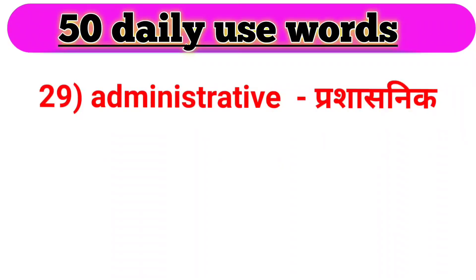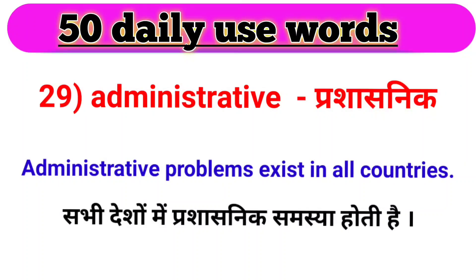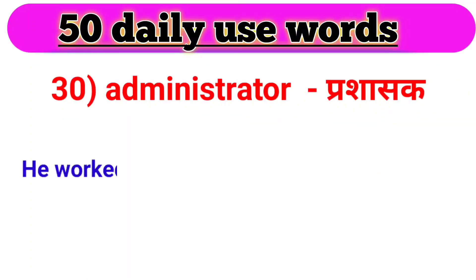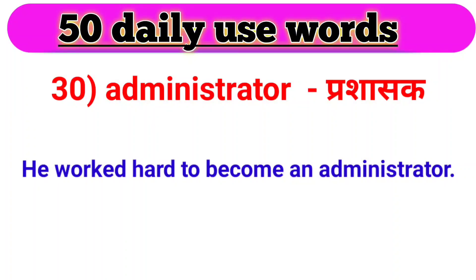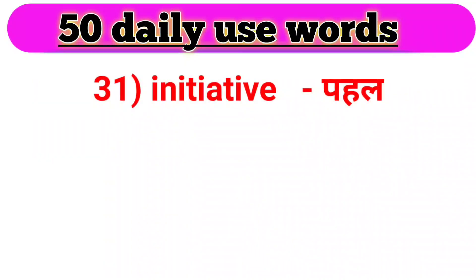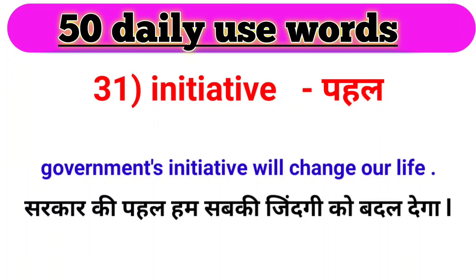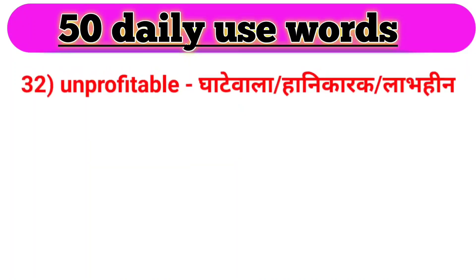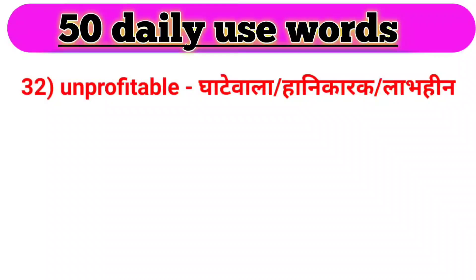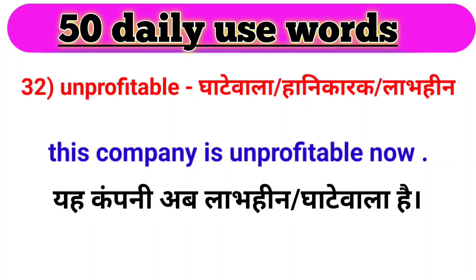Agla word hai — administrative. Administrative ka matlab hota hai prasaasanik. For example: Administrative problems exist in all the countries. Next word, we have administrator. Administrator ka matlab hota hai prasaasak. For example: He worked hard to become an administrator. Usne kaafi mehnat ki prasaasak banne ke liye. Next word, we have initiative. Initiative ka matlab hota hai pahal. For example: Government's initiative will change our life. Sarkar ki pahal ham sab ki zindagi badal degi. Next word, we have unprofitable. Unprofitable ka matlab hota hai ghaate wala ya haanikarak. For example: This company is unprofitable now. Yeh company ab ghaate waali hai.